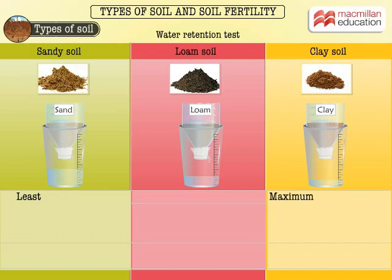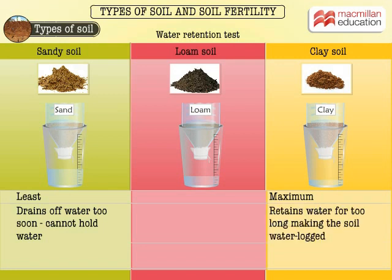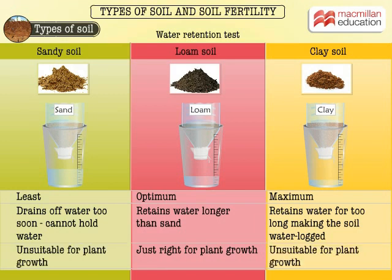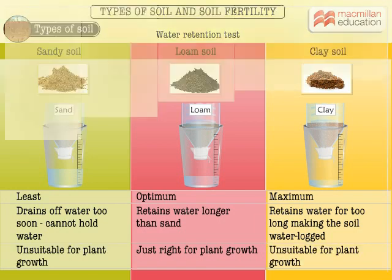We observe that sandy soil has the least water retention capacity while clay has the maximum. Loam, on the other hand, has just the right balance of water retention and is therefore the best choice for growing plants.